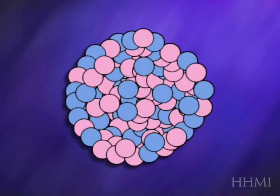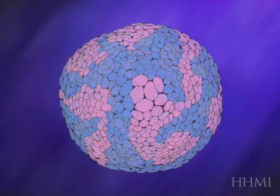The embryo will continue to grow, cells divide, and all the descendants of that cell will keep the same X active.